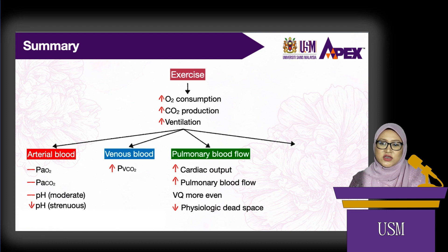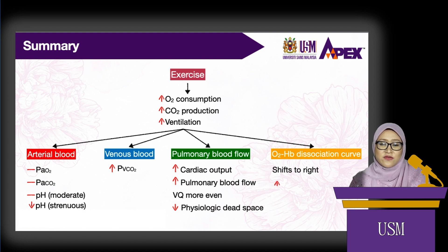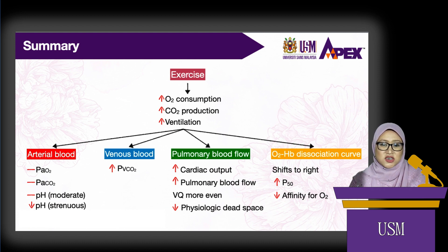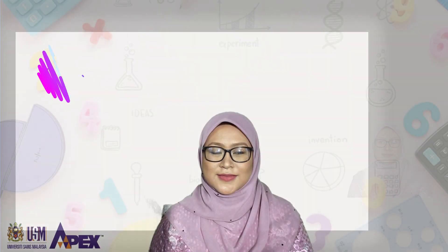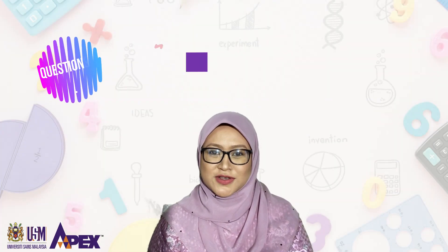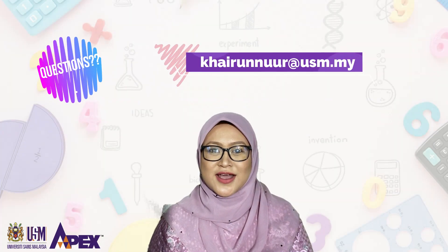Exercise also shifts the oxygen-hemoglobin dissociation curve to the right, which increases the P50 and reduces hemoglobin affinity for oxygen, making it easier for oxygen to be unloaded to the tissues to meet the higher oxygen demand. That's all for the respiratory adjustment during exercise. Thank you for watching.